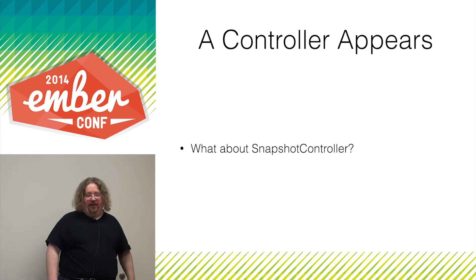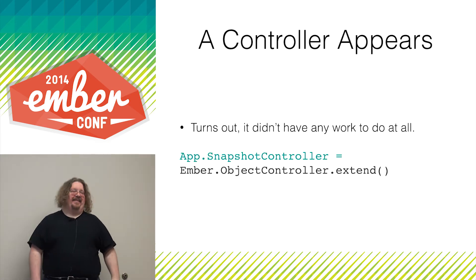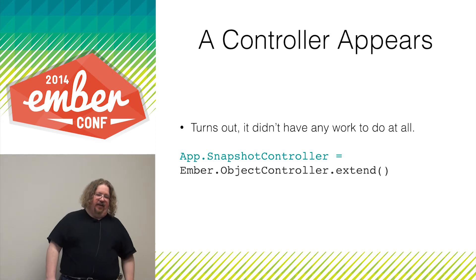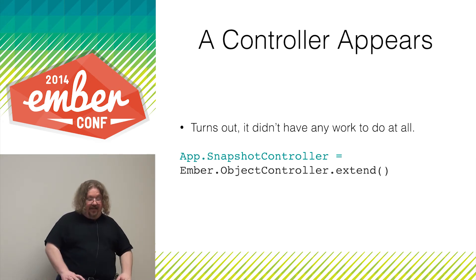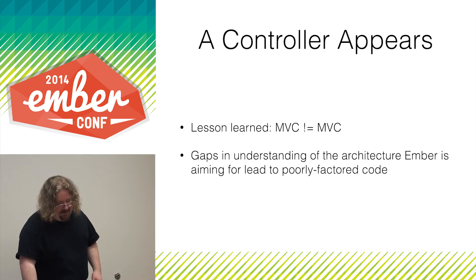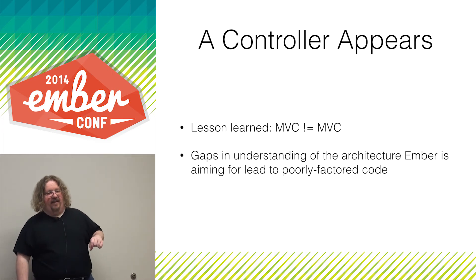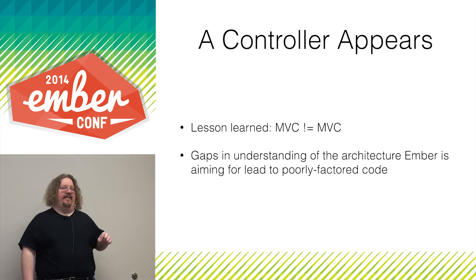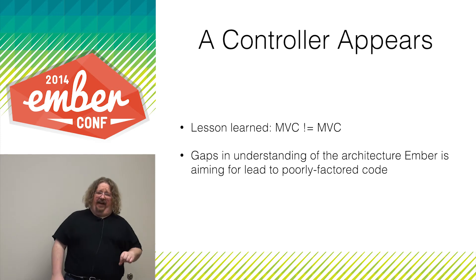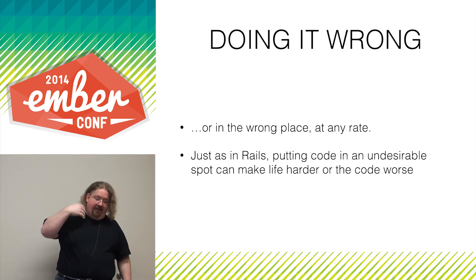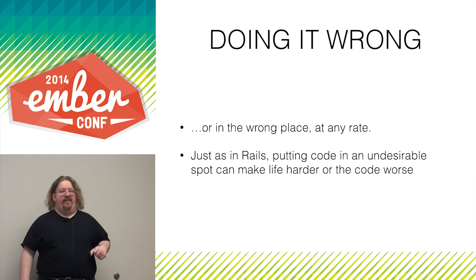And what about SnapshotsController? It turns out SnapshotsController disappears entirely. The only responsibility it has left is maintaining the current state of which snapshot is being viewed via its model attribute — and otherwise has no responsibilities left. So the lesson learned here is that model-view-controller does not mean model-view-controller all the time. MVC is not MVC. Gaps in understanding of this architecture, and assumptions that this is the same architecture you've used elsewhere, can lead you to really badly factored code — or code that's in the wrong place. Just as in Rails, if you put code in an undesirable place, you have to pay the penalty.